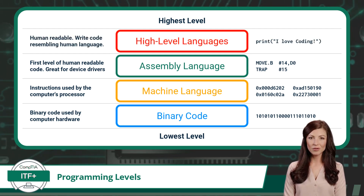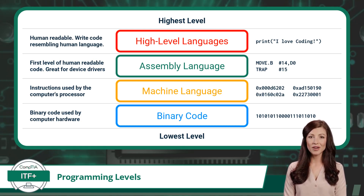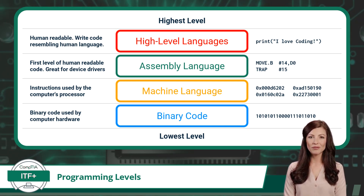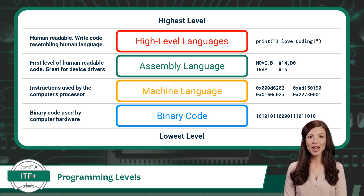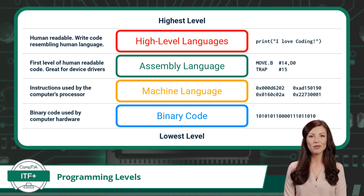Finally, as computers evolved, so did programming languages. High-level languages like Python, Java, C++, C#, and many others were created. These languages are much more human-friendly. In high-level languages, you write code using words and syntax that closely resembles everyday human language. In the next few videos, I will be focusing on the high-level languages, but at a minimum, don't forget the basics about each level we just discussed.